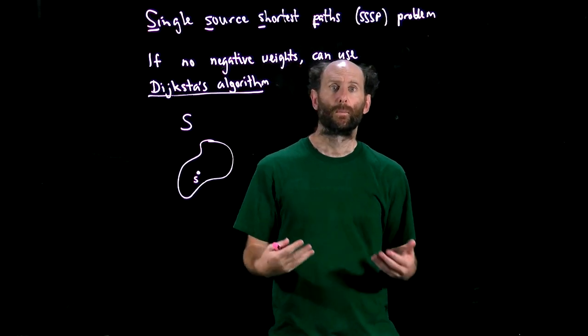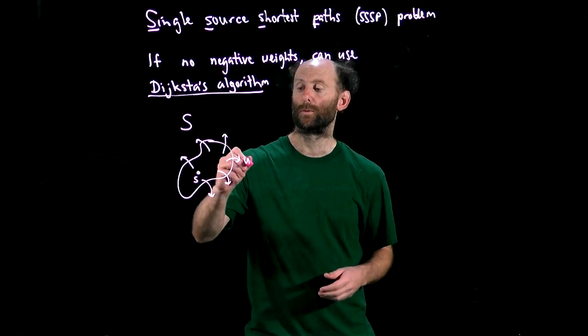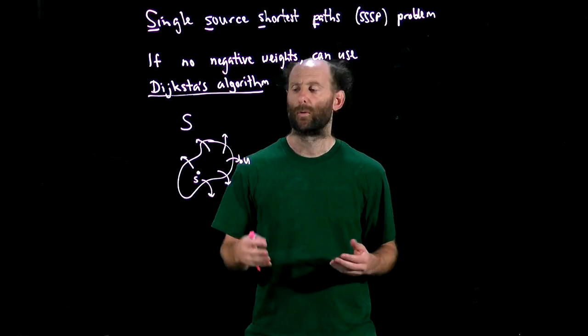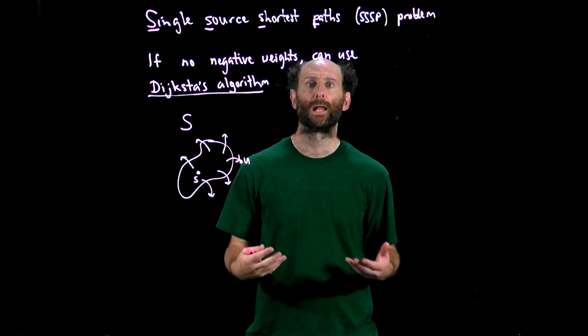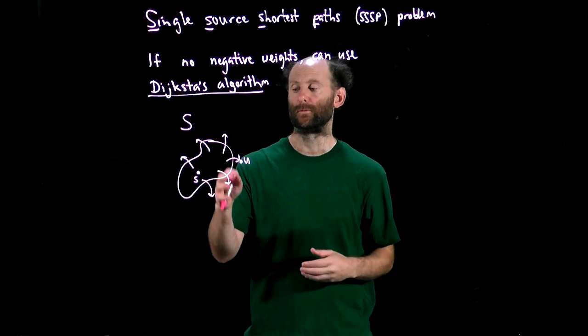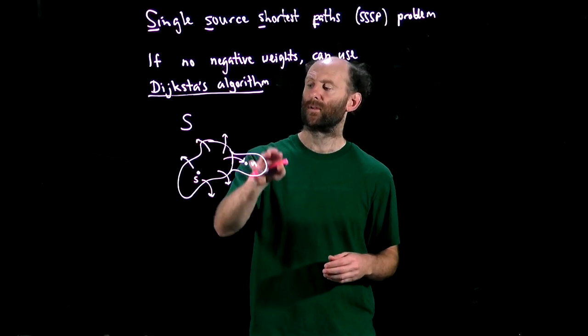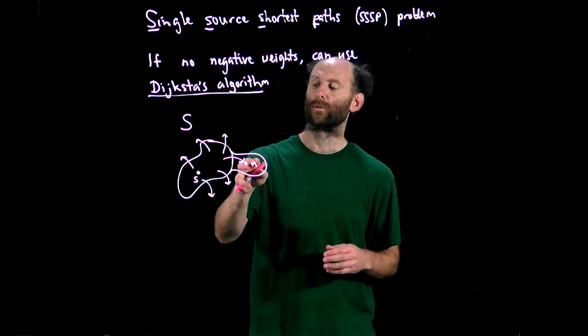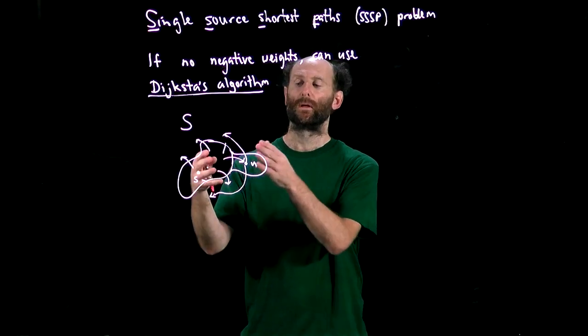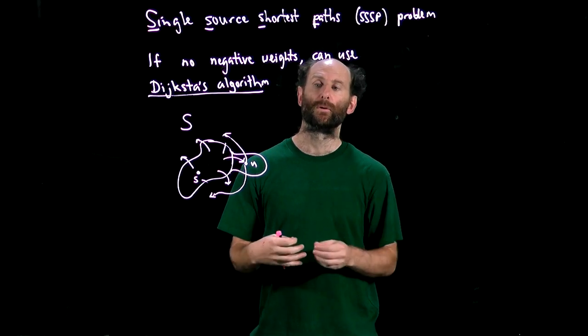At the start S consists just of the source node little s. We then probe all fringe nodes which we define to be nodes that are just one arc away from some node of S and we'll find the closest fringe node let's call it U. So U is the node outside of our set S which has the shortest distance to the source. We'll add U to S and then we'll update the distances to all nodes not in S to see if there is a shortest path through the nodes in S that includes U. So then we'll once again look for the closest fringe node, we'll add it to S and so on slowly building up S node by node. Once we include all nodes we're guaranteed to have our shortest paths to every node from the source.